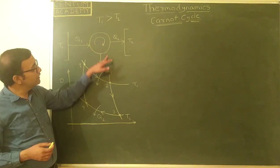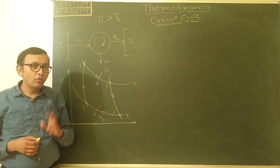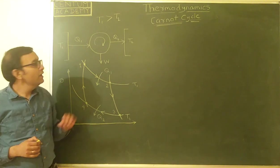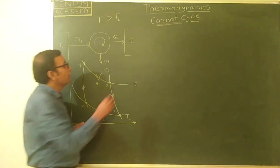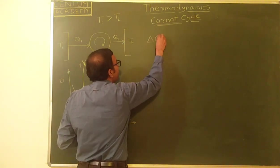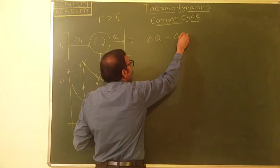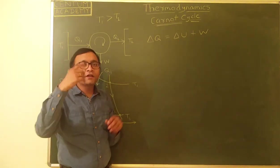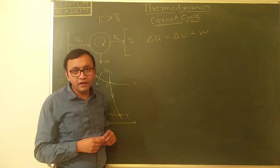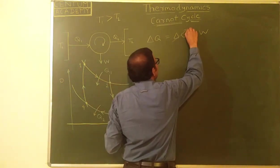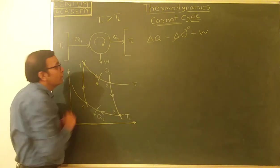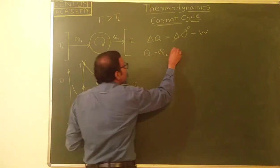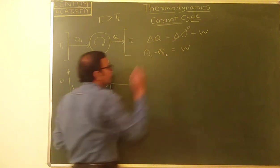In this process the engine does some work. Any engine follows a cycle, so it is a cyclic process. Applying the first law of thermodynamics — delta Q = delta U + W — to a cyclic process: since internal energy is a state function and the system returns to the same point, delta U = 0 for one complete cycle. Therefore, delta Q, which is heat absorbed minus heat released, equals the work done W.